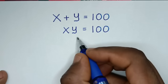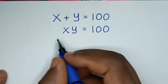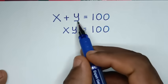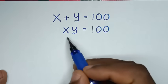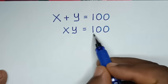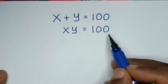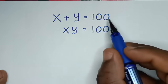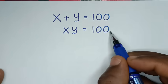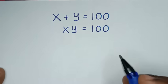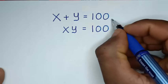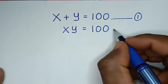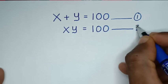Hello, you are welcome to solve this math problem, which is x plus y is equal to 100, x times y is equal to 100, to find the values of x and y from these two systems of equations. In the first step, let's start by letting this as equation 1 and this as equation 2.